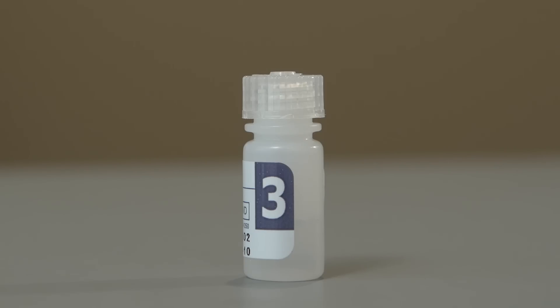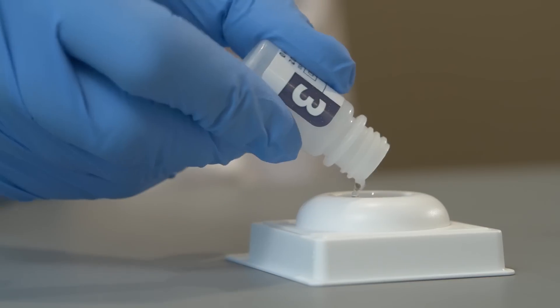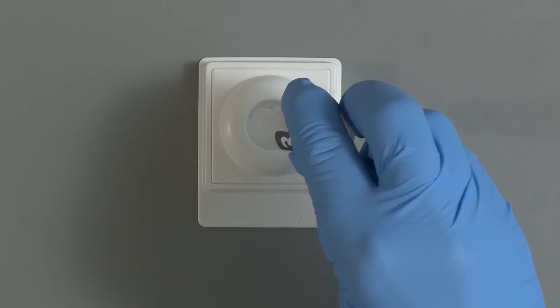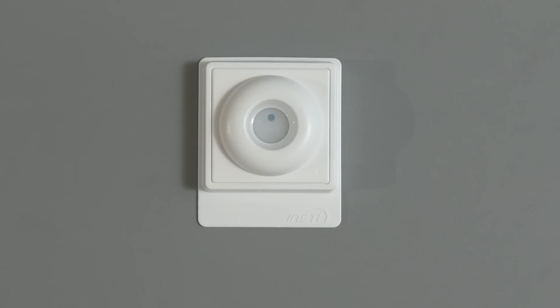Open bottle number three, the clarifying solution, and pour the entire contents into the centre of the membrane unit well. The solution should be absorbed completely. The clarifying solution will reduce the background to provide more contrast to the spots and facilitate reading.